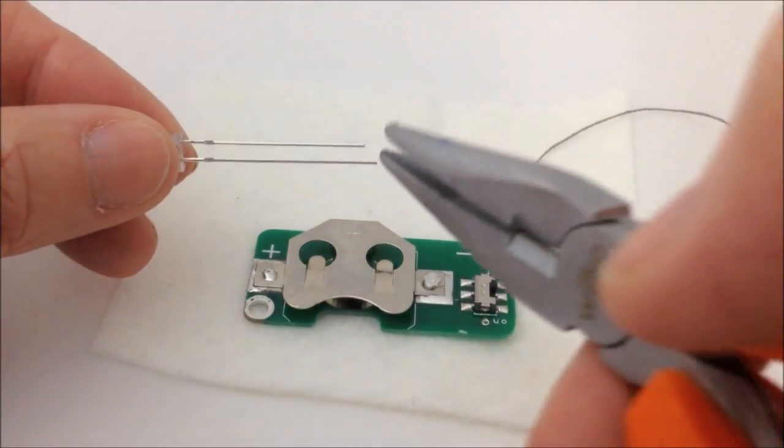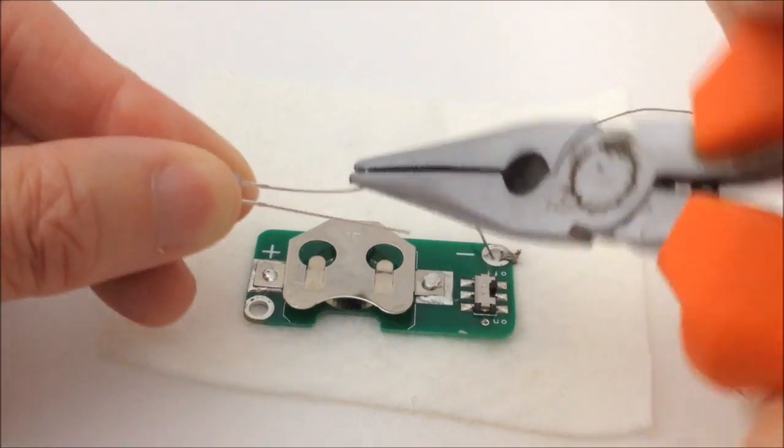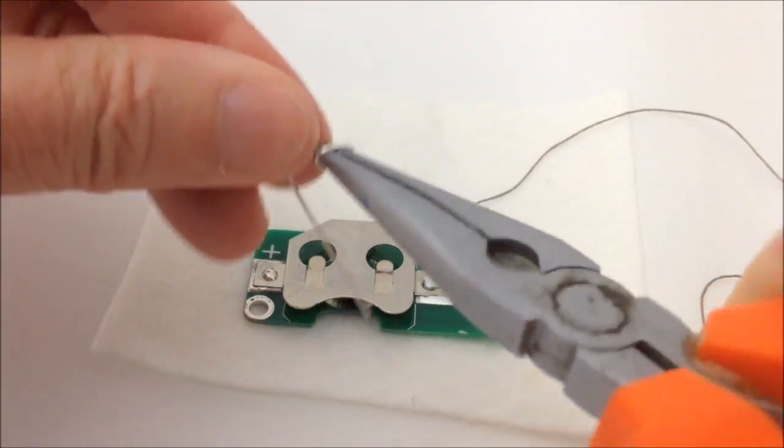You can also twist the LED round the pliers—it's up to you which way you go. Just twisting it to make a small loop, and then just pulling the pliers off the leg of the LED and just flattening it out.